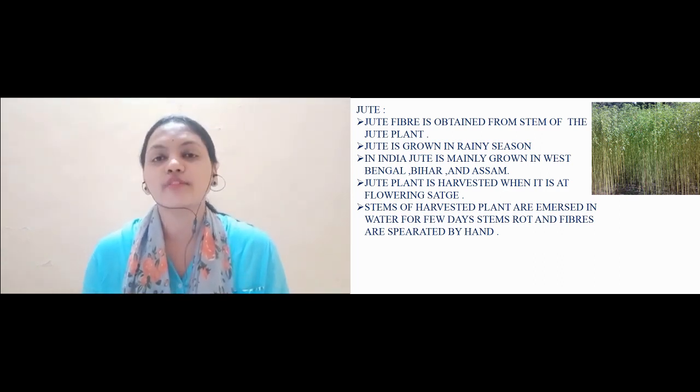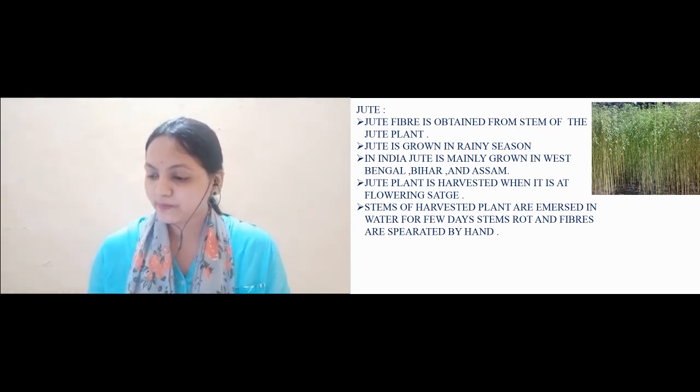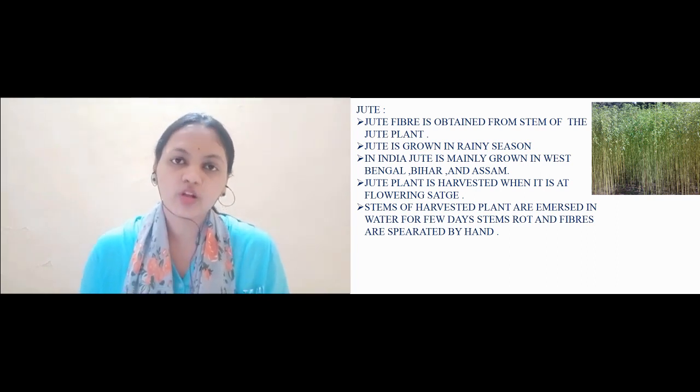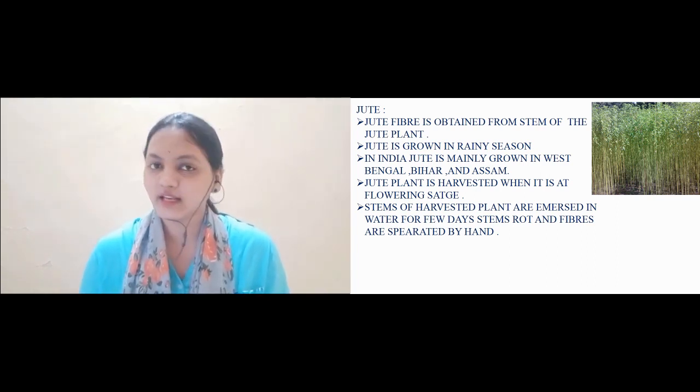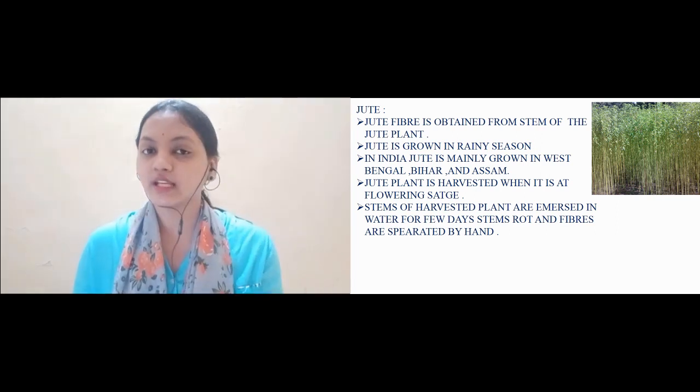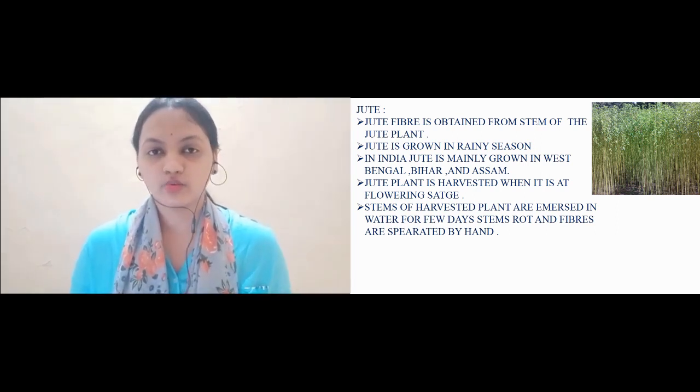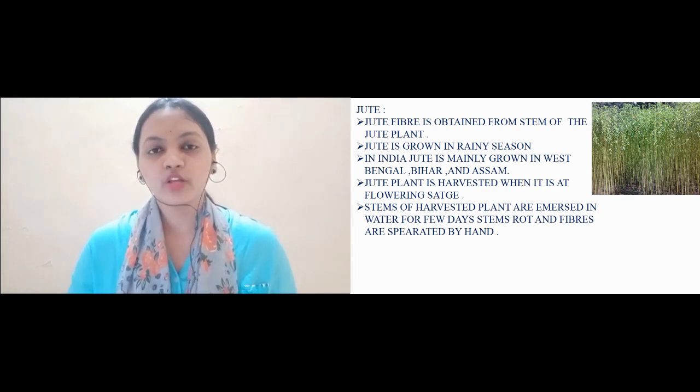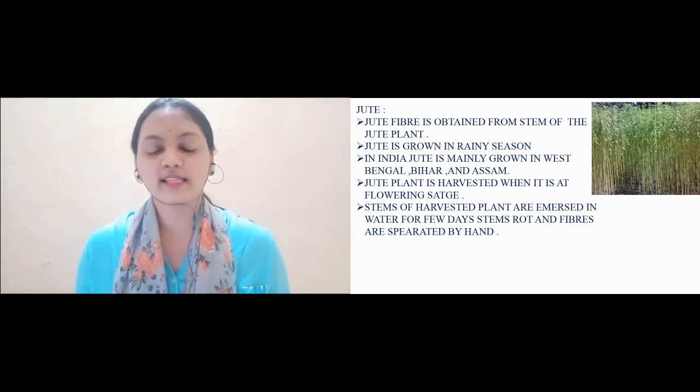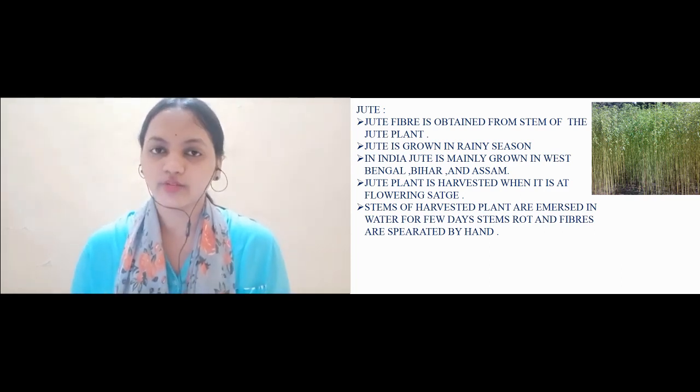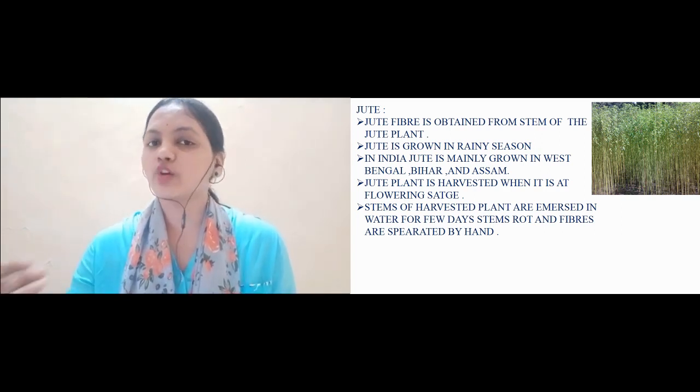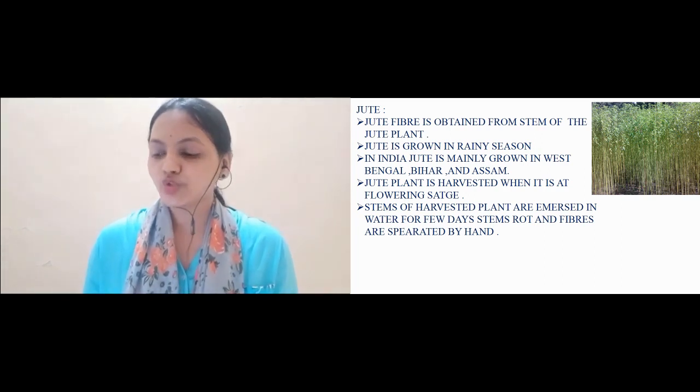So children, in India jute is grown in the regions of West Bengal, Assam, and Bihar. These regions grow jute on a very large scale. Cotton growing regions in India are Gujarat, Maharashtra, Madhya Pradesh, and some parts of Rajasthan.